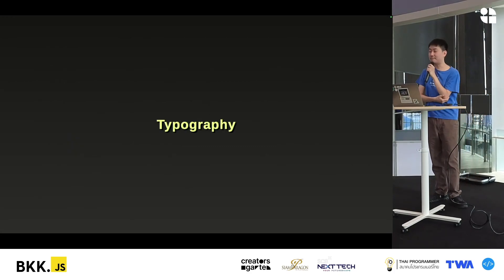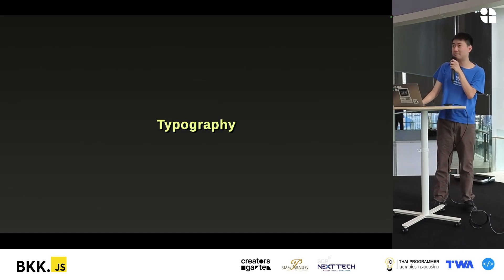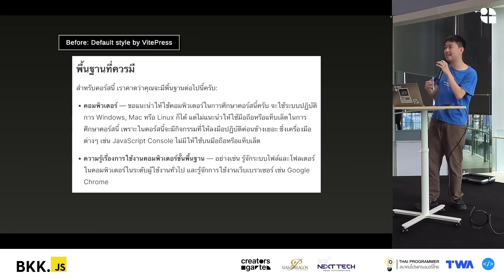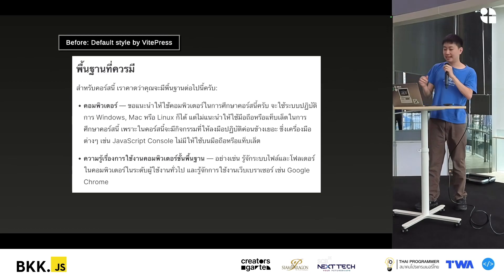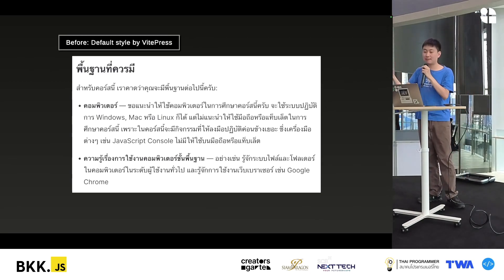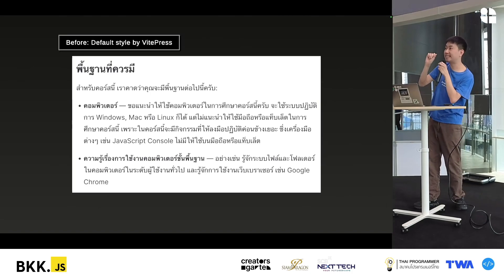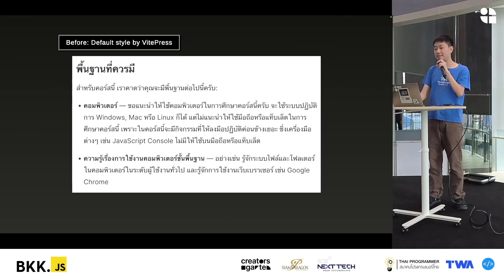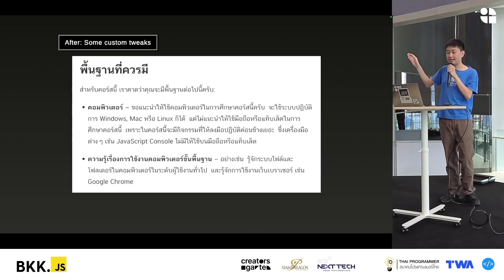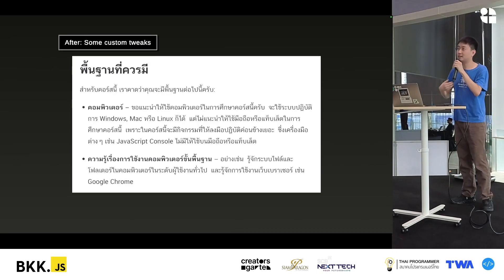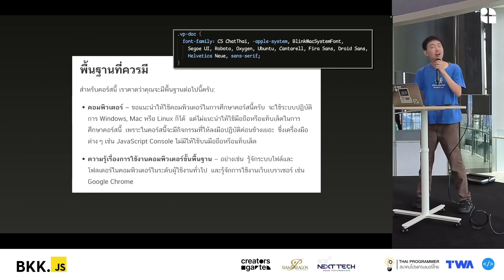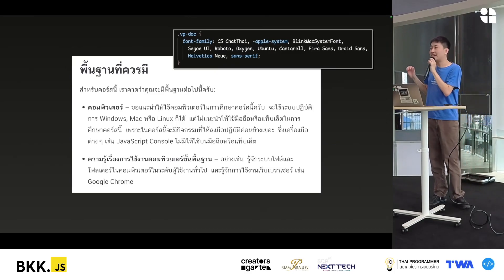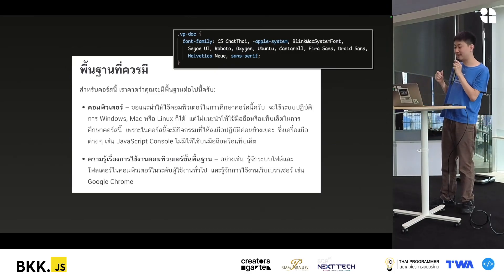The last thing I'm going to talk about today is typography. I have to tell you that I'm not a designer. I'm not able to share things about making it look beautiful in depth. But I've been able to use VitePress a lot — the default theme already has a set style for different text types, so we don't have to set anything. It's very easy. I'm going to add a little bit more, for example adjusting the font and the size, to make it easier for me. This is done by adding CSS.